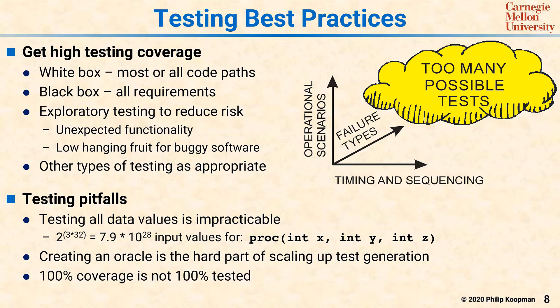Another pitfall is that 100% coverage is not 100% tested. This falls out of the earlier point that you can't test all possibilities. Sure, you can hit every line of code, but you can't hit every line of code with every potential value. So coverage is a heuristic, and high coverage numbers are good, but that's a starting point, not an ending point.